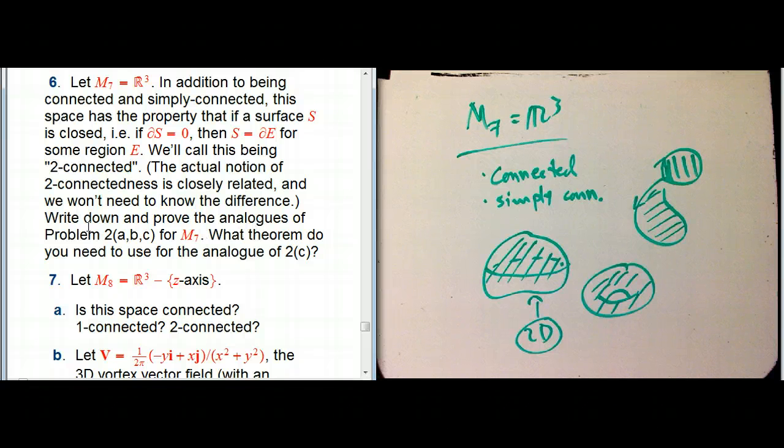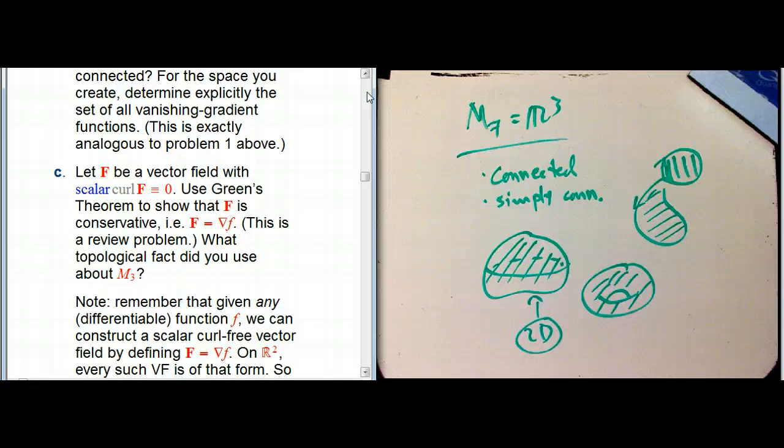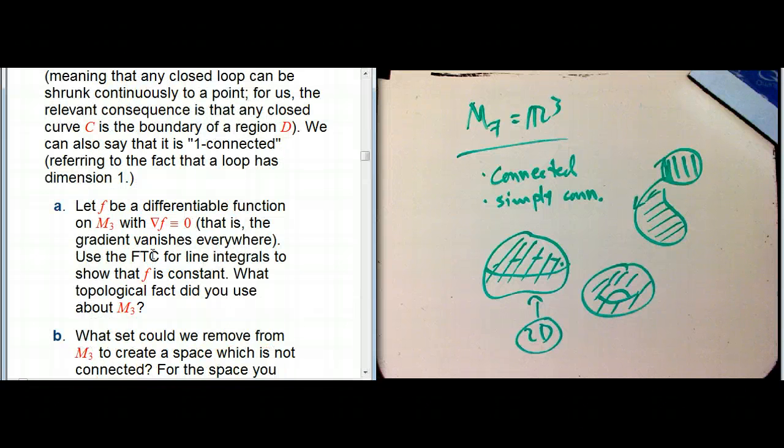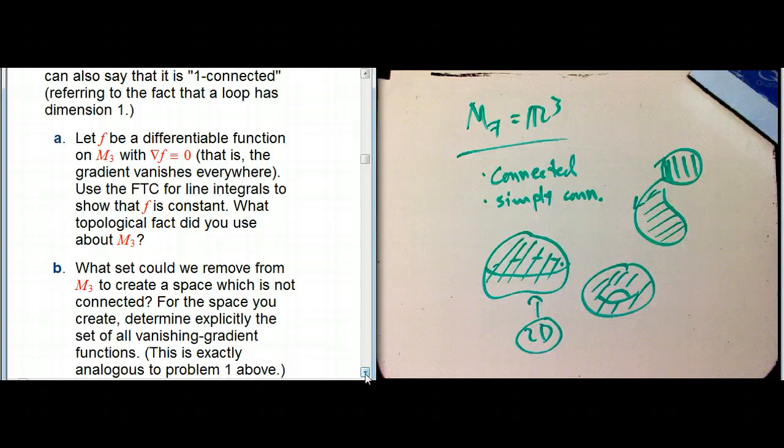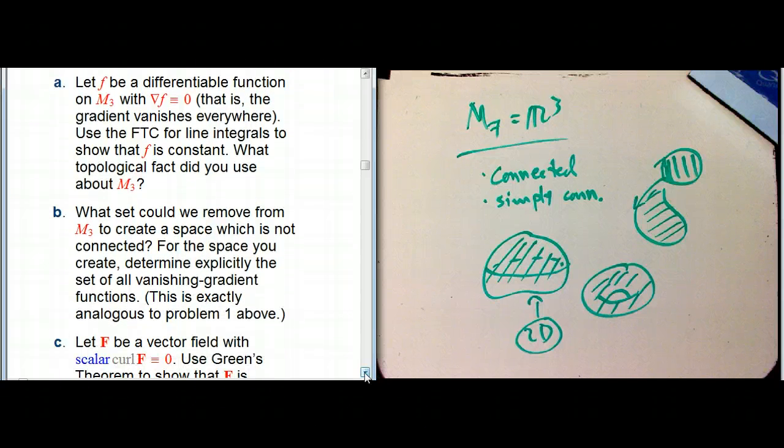So, now I have this. Write down and prove the analogs of problem 2ABC for M₇. So that was when we are dealing with just R². So, 2A was talking about gradient-free vector fields, or gradient-free functions, rather. So, locally constant functions.